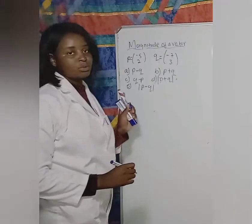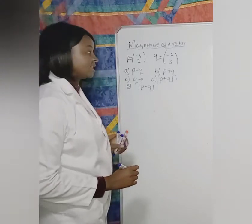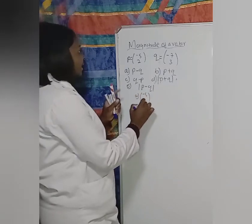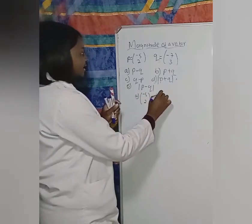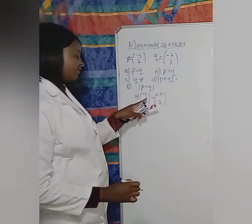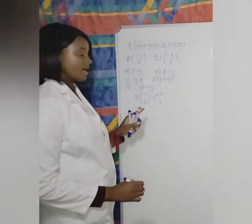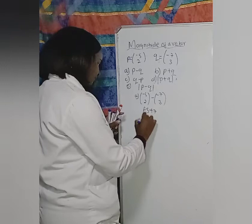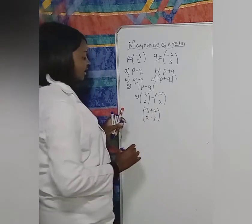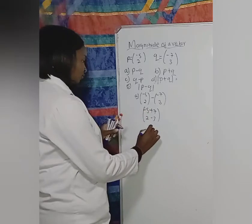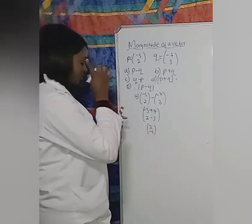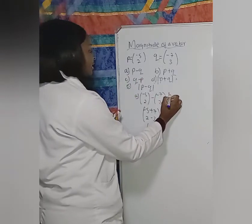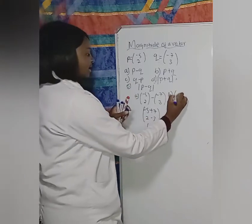Let's subtract P minus Q. P is (-5, 2) minus Q which is (-7, 3). Minus minus becomes plus, so we have minus 5 plus 7, and 2 minus 3. Minus 5 plus 7 is positive 2, and 2 minus 3 is negative 1. So P minus Q equals (2, -1).